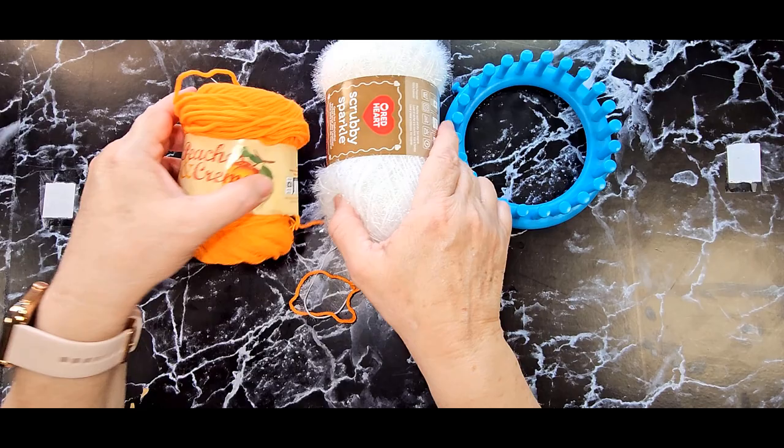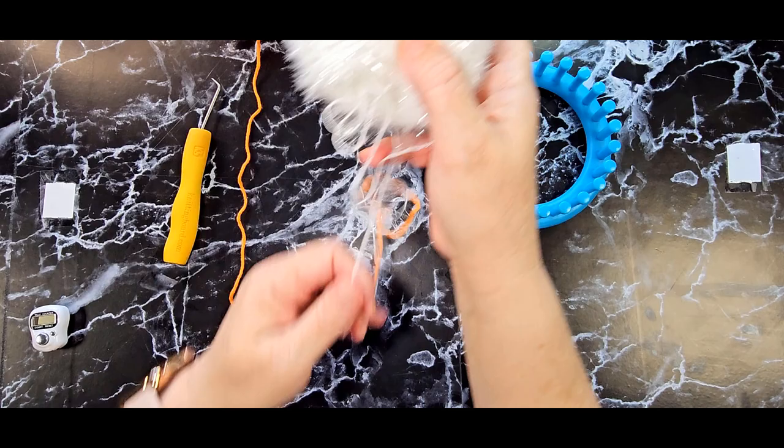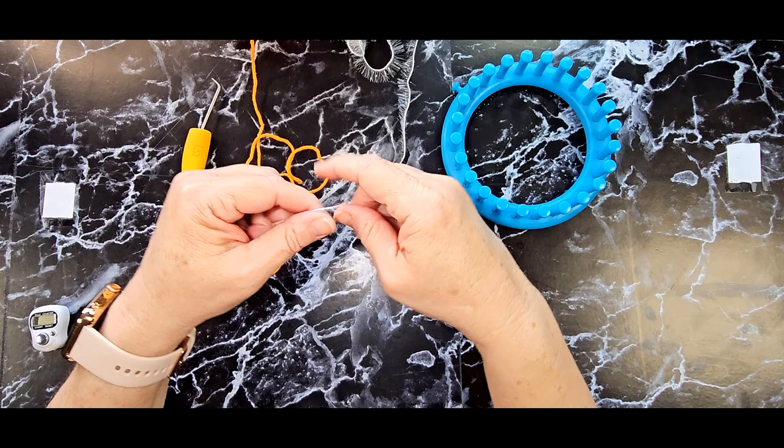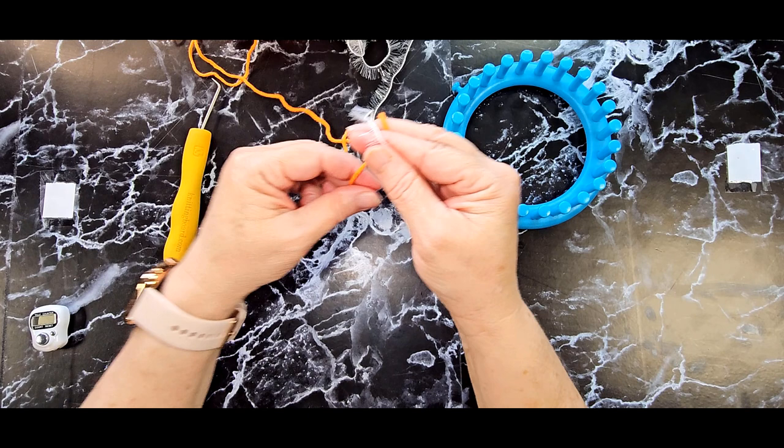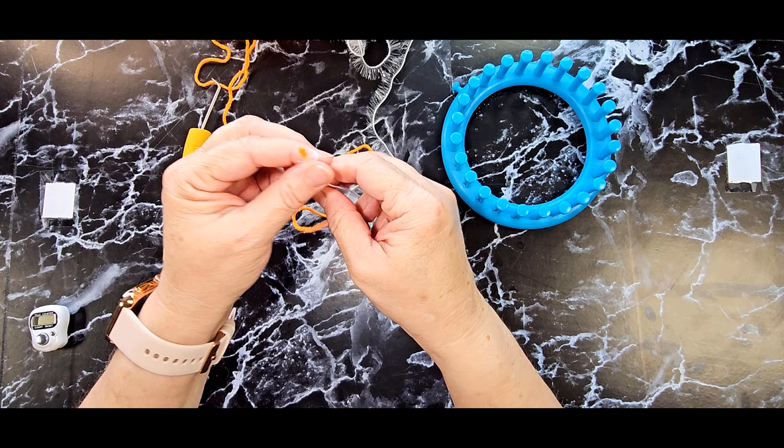Pull out some yarn out of each skein of yarn you have. And you're going to be using two strands as one. So get to the end of both strands here. Put them together and you're going to pretend they are one strand.